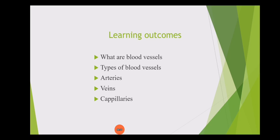In the previous lecture we studied about the blood — what is the blood? And in our first lecture we discussed about the circulatory system. The circulatory system is basically the transport system in our body. We have three components of the circulatory system: number one is the heart, number two is the blood, and number three is the blood vessel.